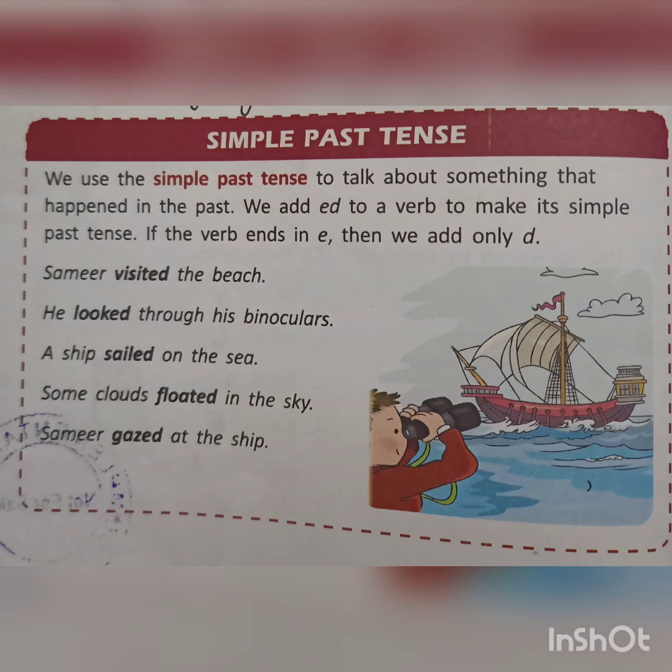For example: Summer visited the beach — 'visited' already ends in -e, so we added only -d. He looked through his binoculars. A ship sailed on the sea. Some clouds floated in the sky. Summer gazed at the ship. All these show simple past tense — visited, looked, sailed, floated — all mean something that already happened.